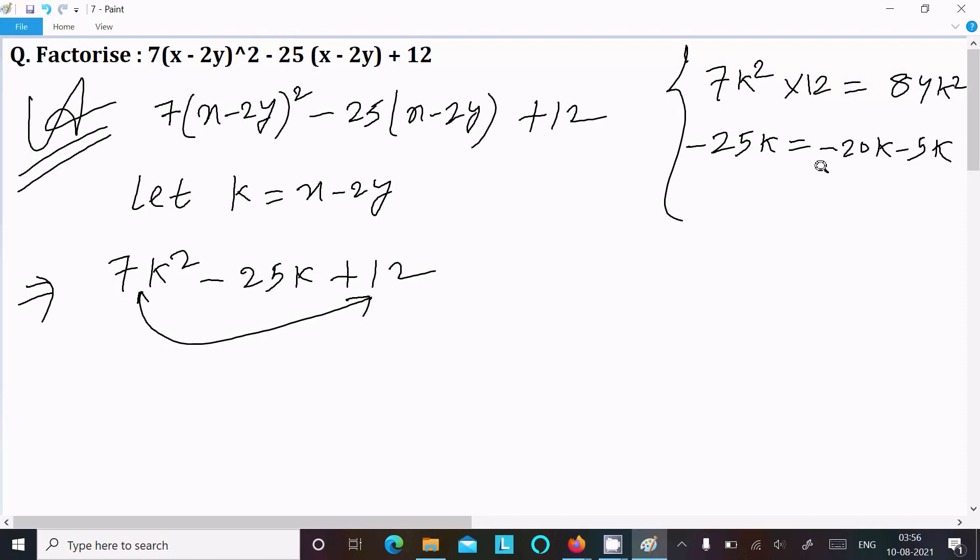When you add it equals minus 25k, and if you multiply minus 20k into minus 5k, it is equal to 100k². So these two are not the same.